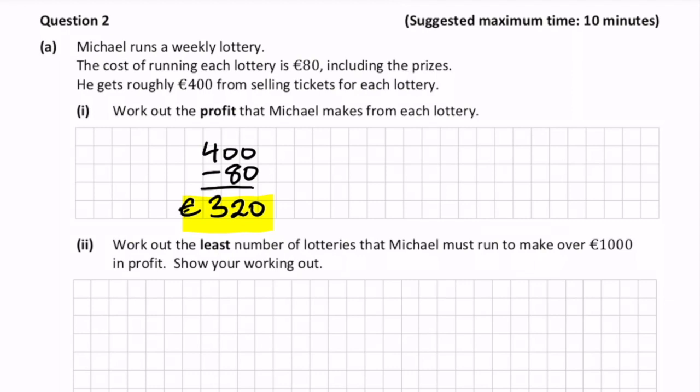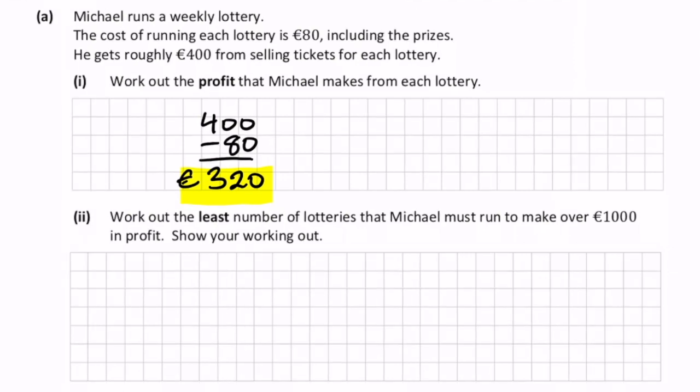Work out the least number of lotteries that Michael must run in order to make over a thousand euros of profit and show your working out. For the first lottery, he gets 320. And if he ran the second one, he'd get another 320 on top of this. So the total there would be 640.